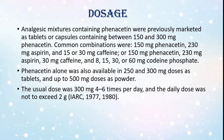Dosage: Analgesic mixtures containing phenacetin were previously marketed as tablets or capsules containing between 150 and 300 milligrams. Common combinations were 150 mg phenacetin, 230 mg aspirin, and 15 or 30 mg caffeine; or 150 mg phenacetin, 230 mg aspirin, 30 mg caffeine, and 8, 15, 30, or 60 mg codeine phosphate. Phenacetin alone was available in 250 and 300 mg tablet doses and up to 500 mg as powder. The usual dose was 300 mg, 4–6 times per day, not to exceed 2 grams daily.